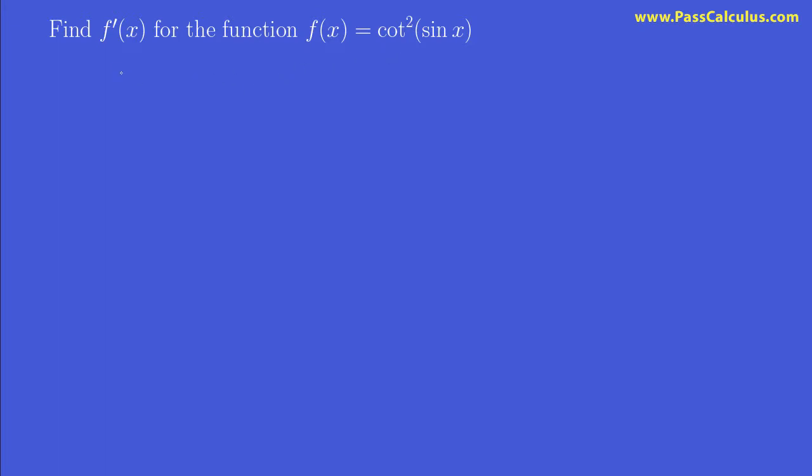So before we even do the derivative, I would like to rewrite this a little bit. I think it'll help. Let's write it like this. It's the same thing, right? Of course the 2 looks nicer when it's there, but it may be a little bit confusing. And when we write it outside like this with a pair of brackets around everything, I think it makes it much more clear how the derivative is going to go.